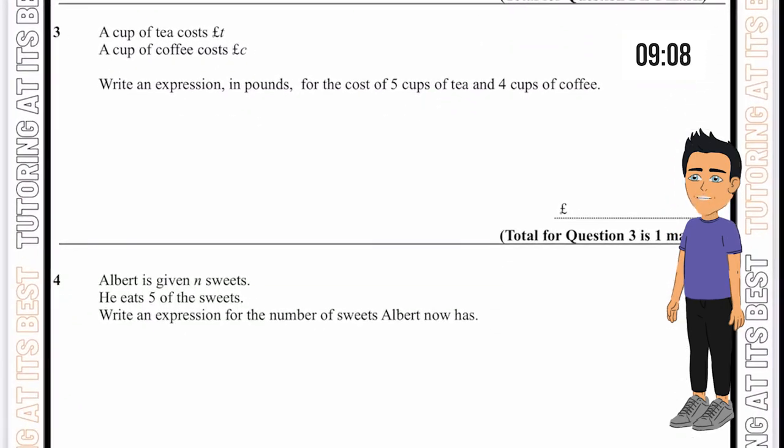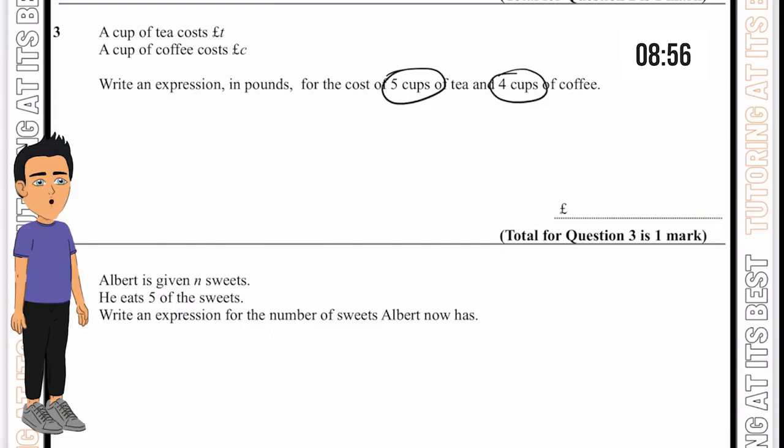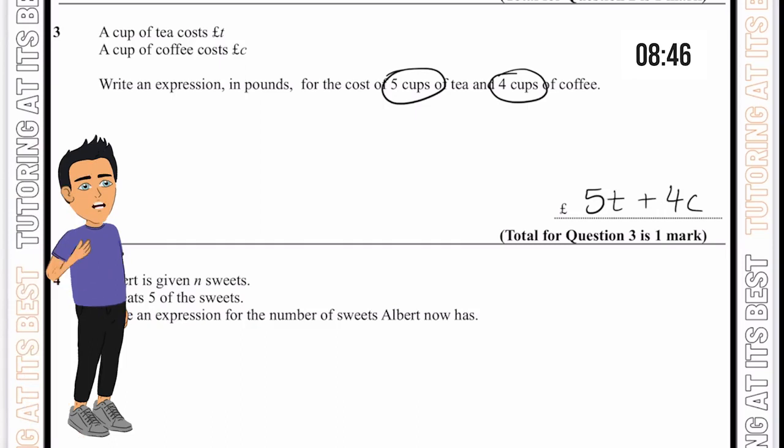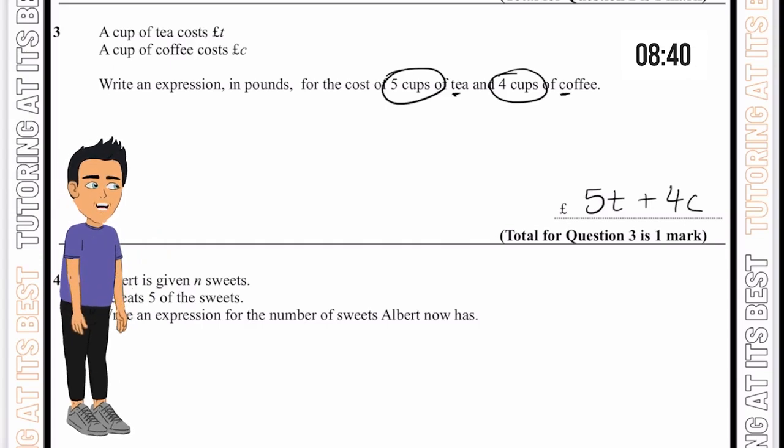Number 3. A cup of tea costs t pounds and a cup of coffee costs c pounds. We need 5 cups of tea and 4 cups of coffee. We'll write out 5t plus 4c because that is 5 cups of tea and 4 cups of coffee. The t stands for tea and c stands for coffee.